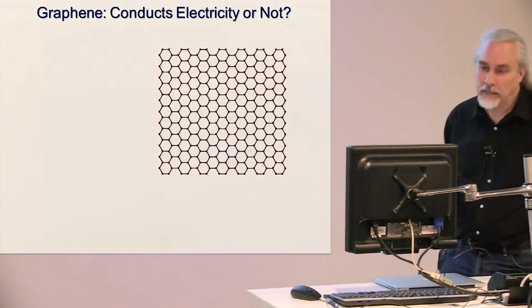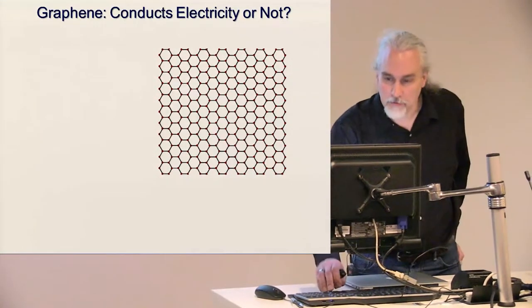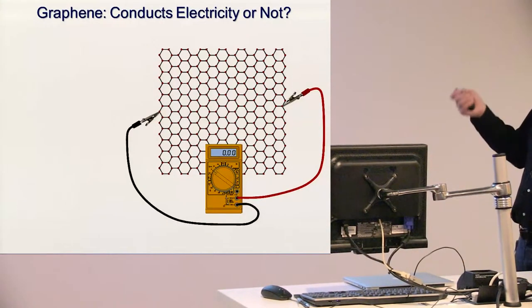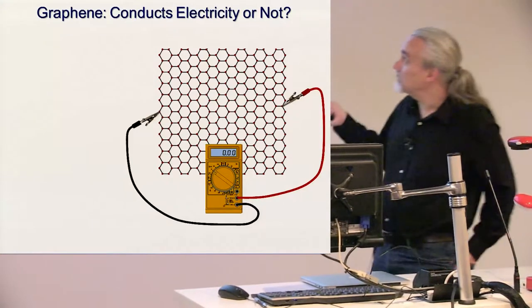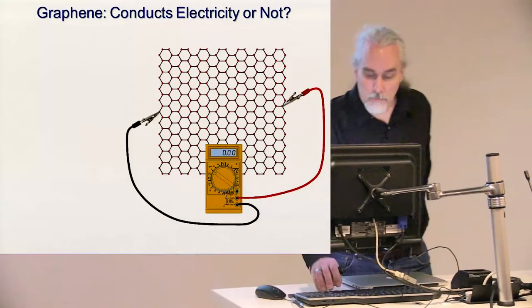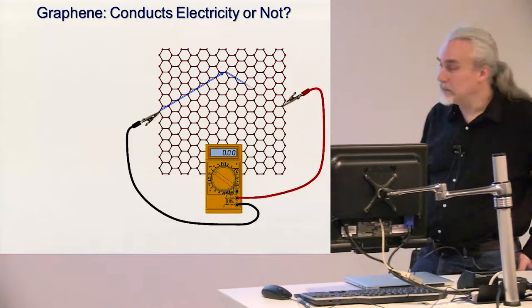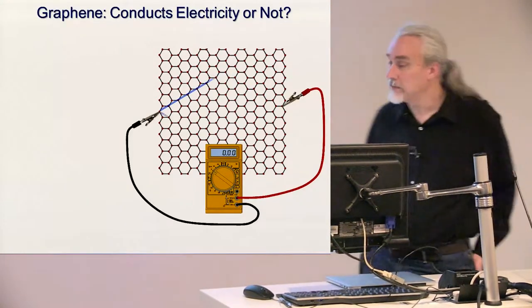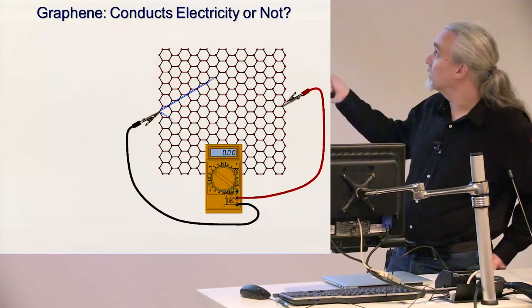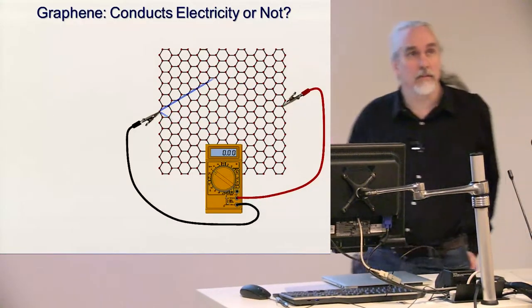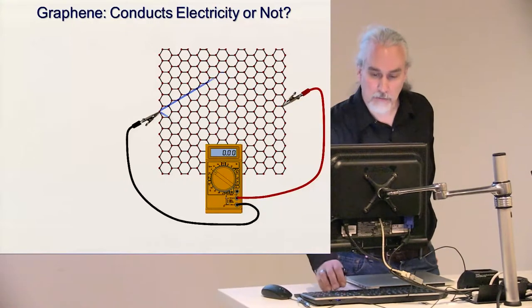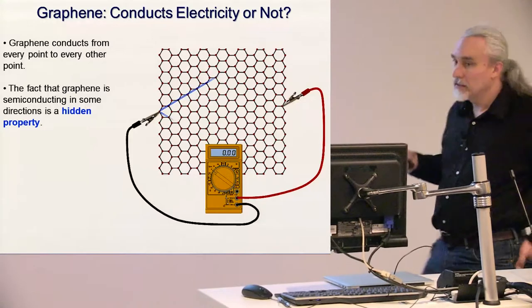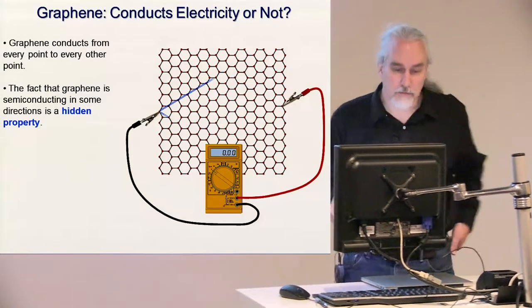The reason I say it's hidden is that if we were to do the thought experiment of taking a voltmeter or a multimeter and hooking it up with little tiny alligator clips to this graphene and measured its resistance we'd find that it conducts and that's because there are always some zigzag paths in fact infinitely many that connect these two points on the graphene sheet. So it does conduct current in any direction that we like. So this is in some sense a hidden property that we have, there are some directions where the current is not flowing.